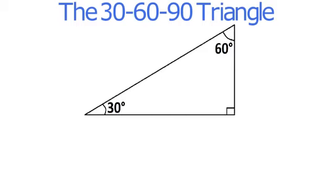Starting with an equilateral triangle that has a side of length 2 gives you a triangle with a hypotenuse of 2 and a short leg of 1.